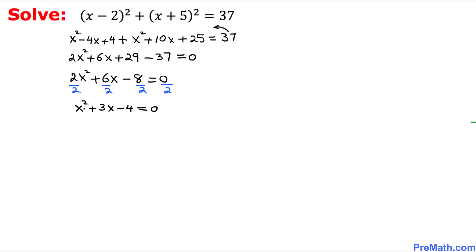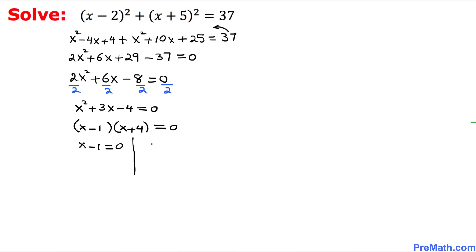Now we can easily factor this quadratic equation. The possible factors are 1 and 4, so the first factor is going to be (x minus 1) and the other is (x plus 4). Since these two factors equal 0, we split them: x minus 1 equals 0 and x plus 4 equals 0.